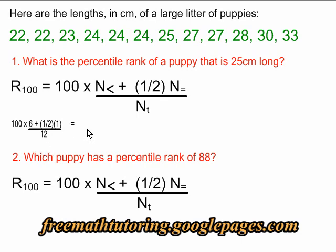Using the rules of BEDMAS, we simplify this formula. First, a half times 1 is equal to 0.5. Then 6 plus 0.5 is equal to 6.5. Then 6.5 divided by 12 rounds to 0.542.